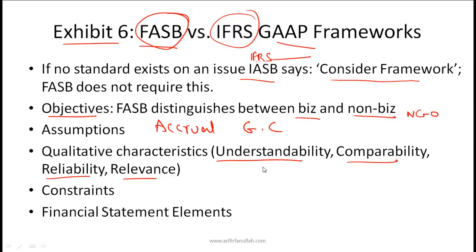Relevance and reliability are considered primary qualities whereas comparability is deemed to be a secondary quality under FASB. This is not the case with IFRS, where the order of importance is different. The best way to study this is Exhibit 6 in the curriculum. This is probably one of the hardest things to do because you need to go through this reading in a lot of detail — I have tried to identify the most important points and exhibits so you can memorize this information and be ready for it on the exam.